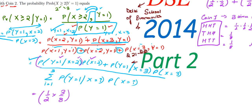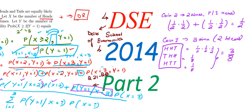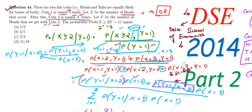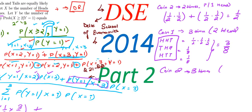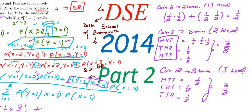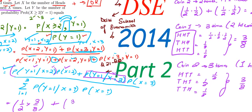Plus P(Y=1 | X=3): given X=3, we toss coin 2 three times and need one head. The possible cases are: HTT, THT, and TTH — three cases, each with probability 1/8, giving 3/8. So P(Y=1 | X=3) = 3/8, and this term is (3/8) × P(X=3).